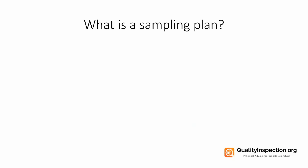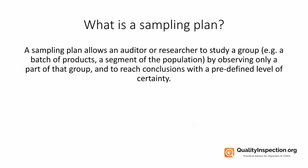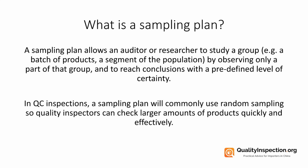What is a sampling plan? A sampling plan allows an auditor or researcher to study a group — for example, a batch of products or a segment of the population — by observing only a part of that group, and to reach conclusions with a predefined level of certainty. More relevantly for importers and manufacturers, in QC inspections a sampling plan will commonly use random sampling so quality inspectors can check larger amounts of products quickly and effectively.